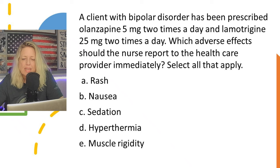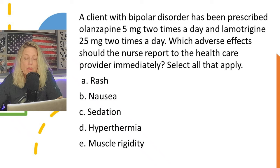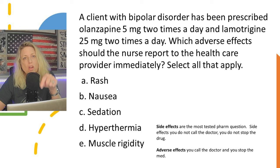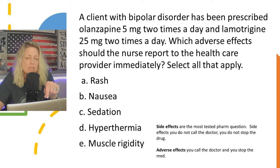A client with bipolar disorder has been prescribed olanzapine 5mg twice a day and lamotrigine 25mg twice a day. Which adverse effects should the nurse report to the healthcare provider immediately — select all that apply. These are psych drugs for bipolar disorder. Side effects are the most tested type of pharmacology question on the NCLEX — they test side effects more than anything else.